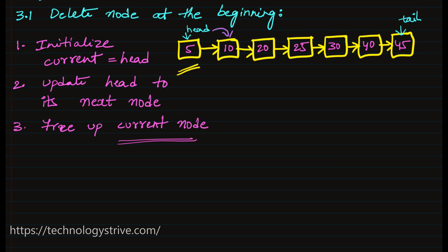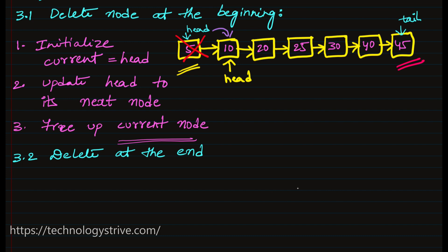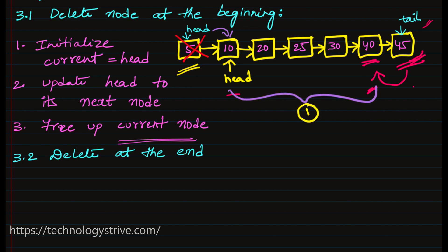The second case is delete at the end. We are interested to delete the last node, which is the tail node. To delete the last node, the previous node's next has to be marked as null. But from the tail position we cannot directly get the previous node. So we have to start from head, traverse to reach the second-to-last position, and then update its next to null.